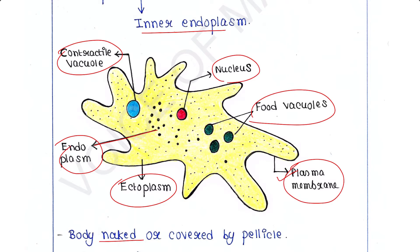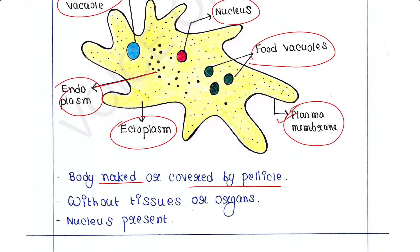Body is naked or covered by pellicle. Body means just a cell. Some of them contain just a plasma membrane around this single cell and are called naked. Some of them are covered by pellicle, which is an outer covering around the plasma membrane. They do not have tissues or organs. Nucleus is present.